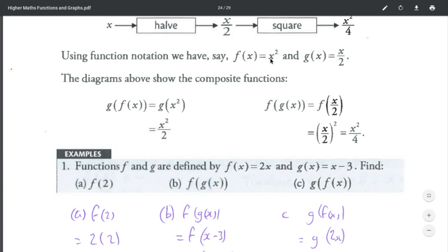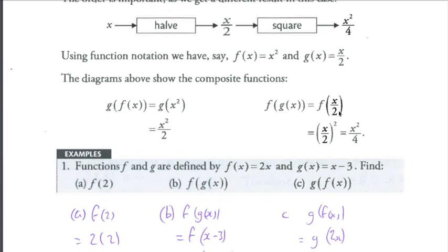F of negative 3 would be negative 3 squared. F of A would be A squared. F of C would be C squared. F of C divided by 2 would be C divided by 2 all squared. So F of X divided by 2 would be X divided by 2 all squared, which is X times X, X squared, over 2 times 2, which is 4.